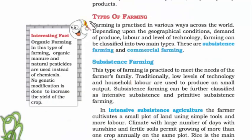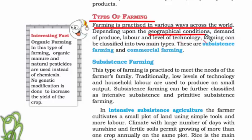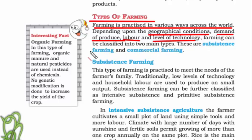The world is big, and farming is practiced in different ways because of geographical conditions — whether it's a hot or cold place — as well as the demands of produce. Countries with more population have greater demand. Labor is also a factor: not everything can be done by machines, and skilled labor availability and cost matter. Finally, the level of technology available determines how efficiently and at what scale farming is done. Farming is divided into two types: subsistence farming and commercial farming.